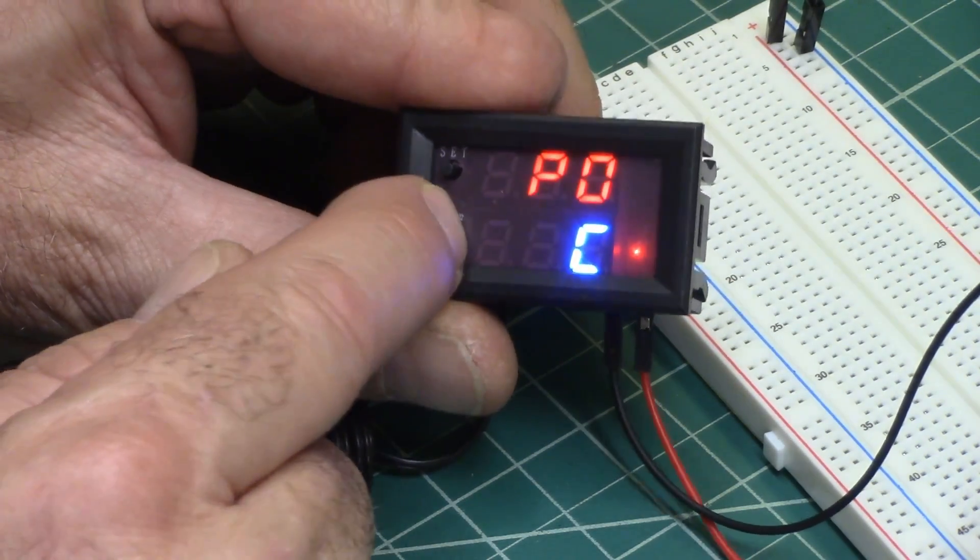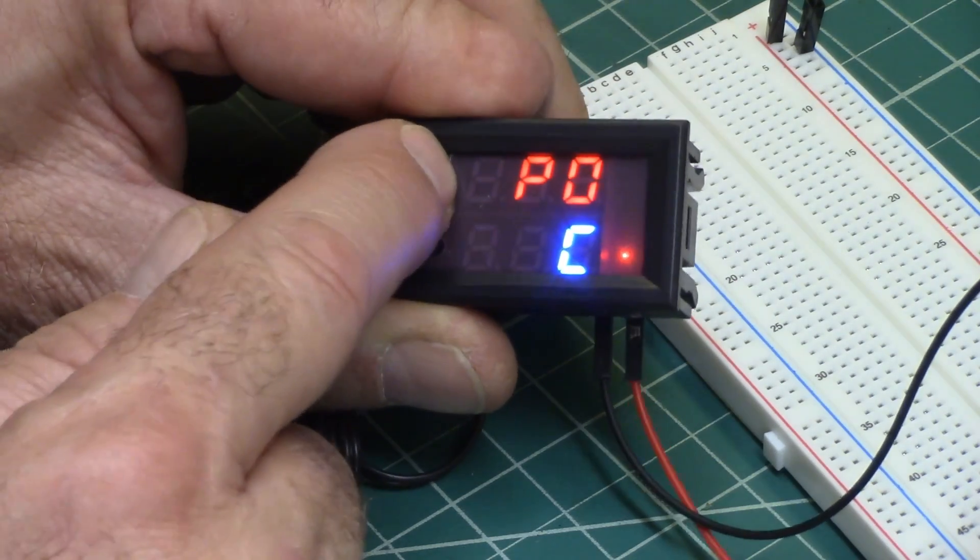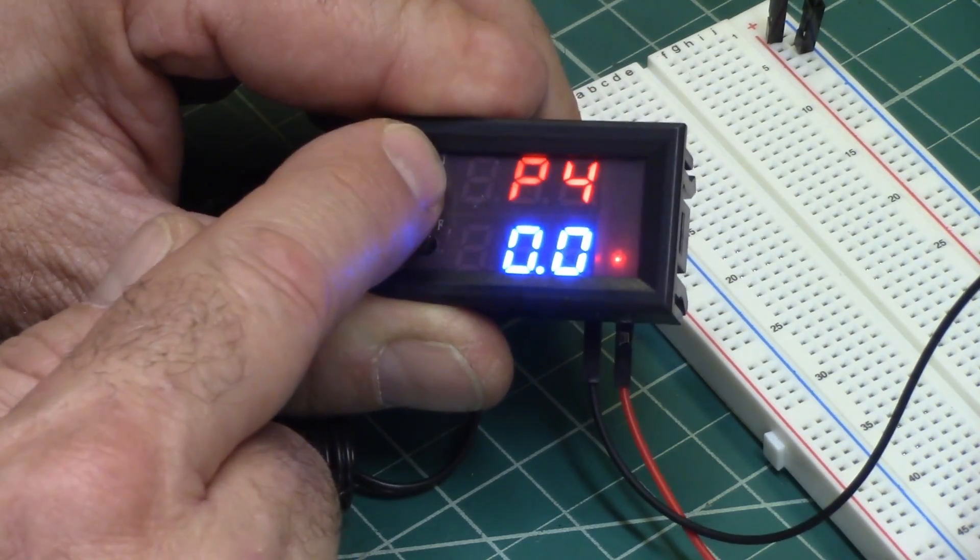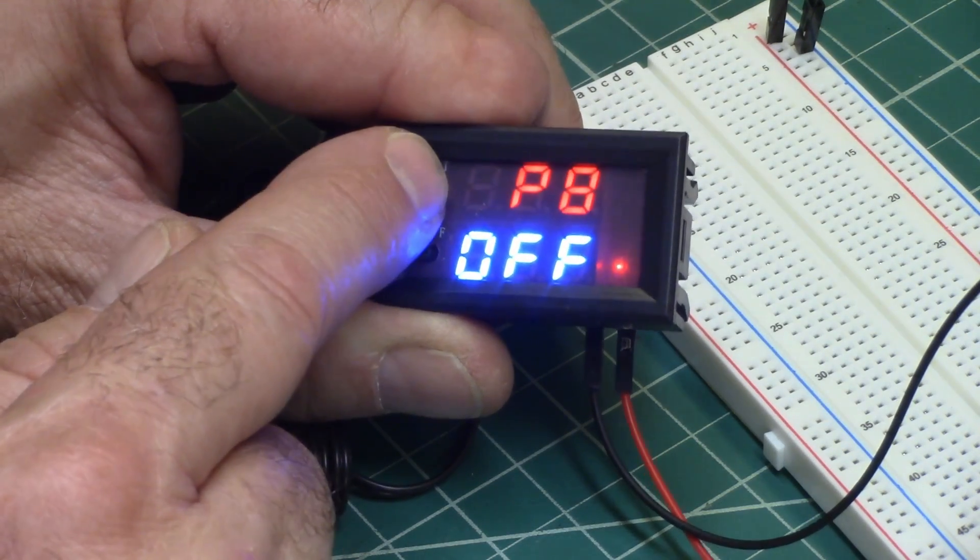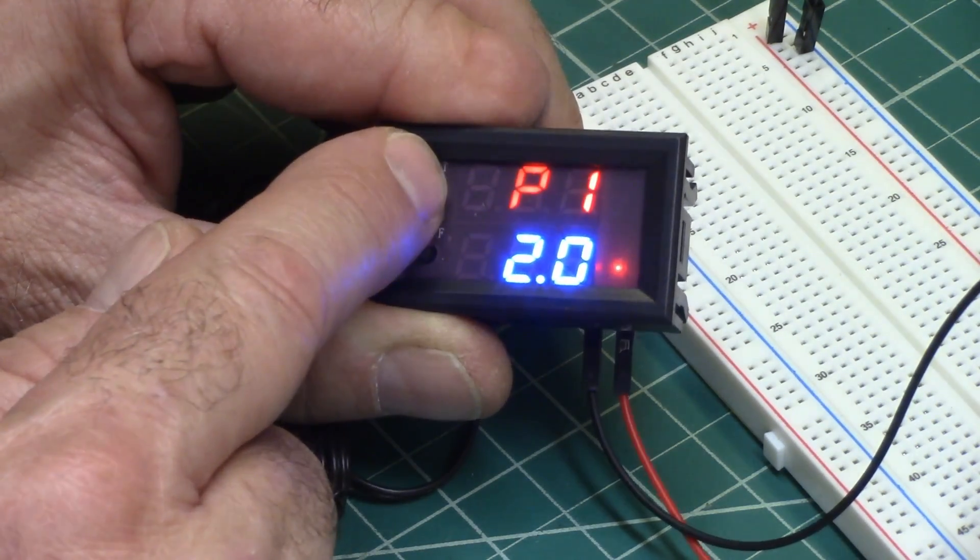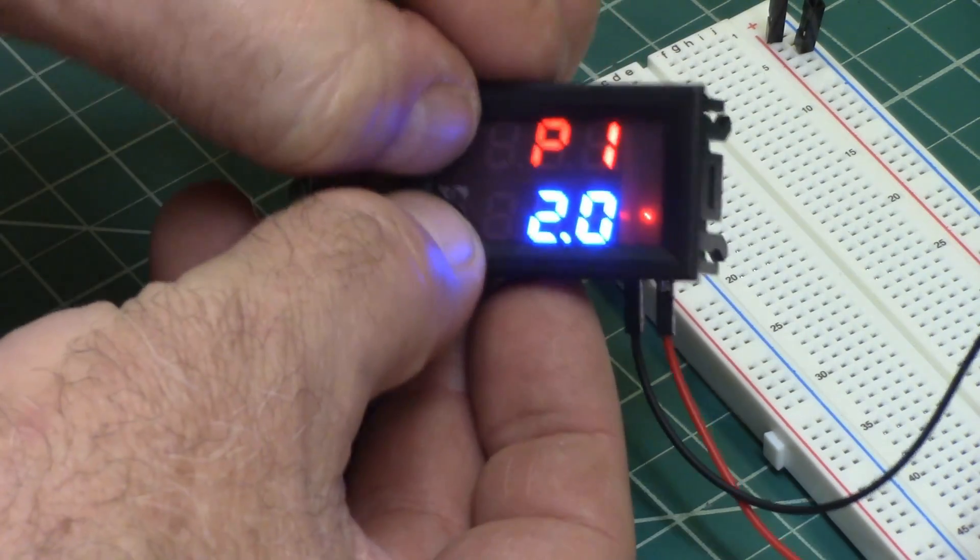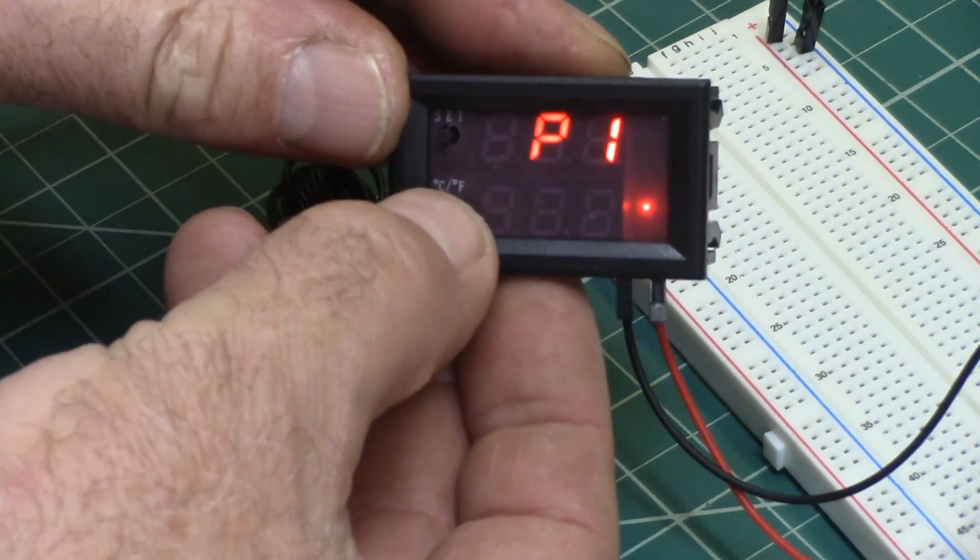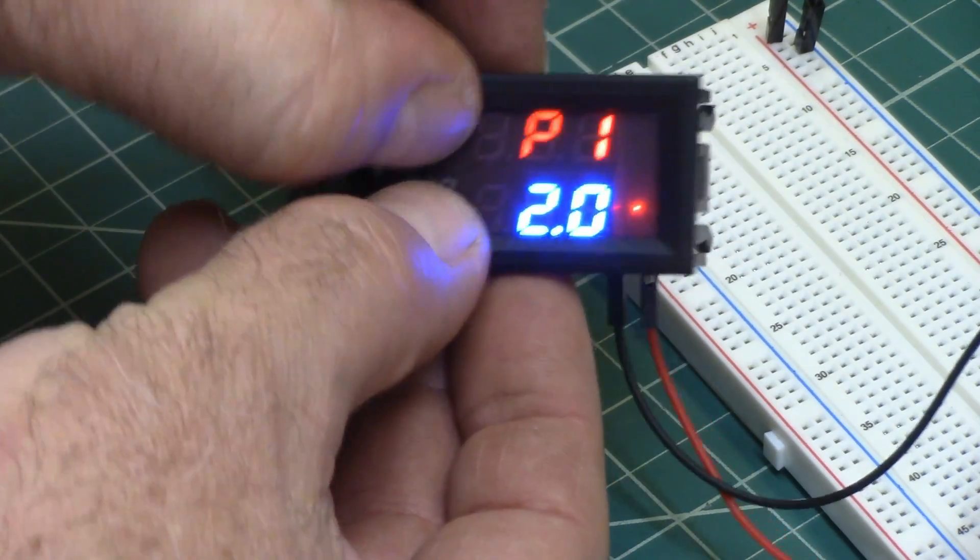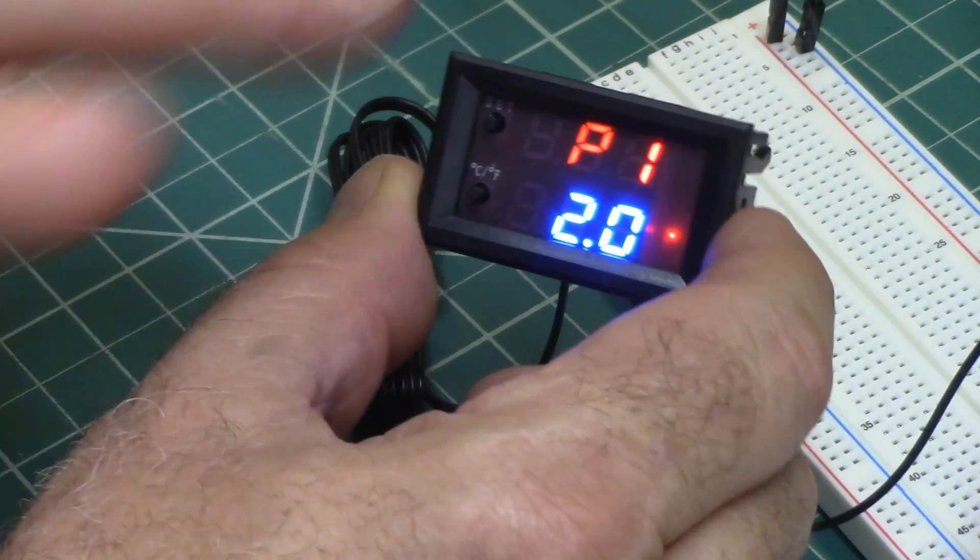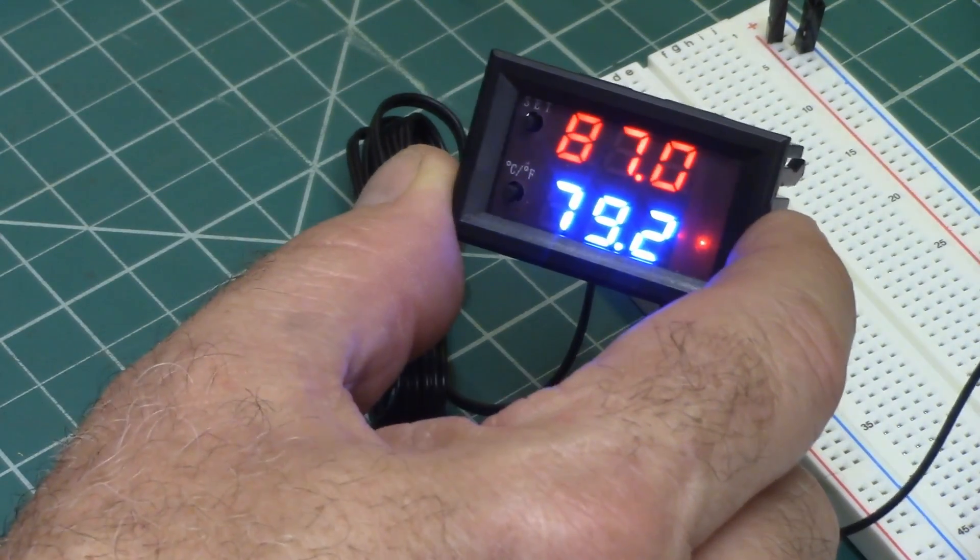And then you scroll through them like this. One, two, three, four, five, six, seven, and eight. And then when you find the one that you want to adjust, you hit both of these together. And then you can use these as up and down arrows to adjust it to where you want it to be. And then you hit both of them to lock that in. Okay, so now that we've done that, let's talk about what each one is.